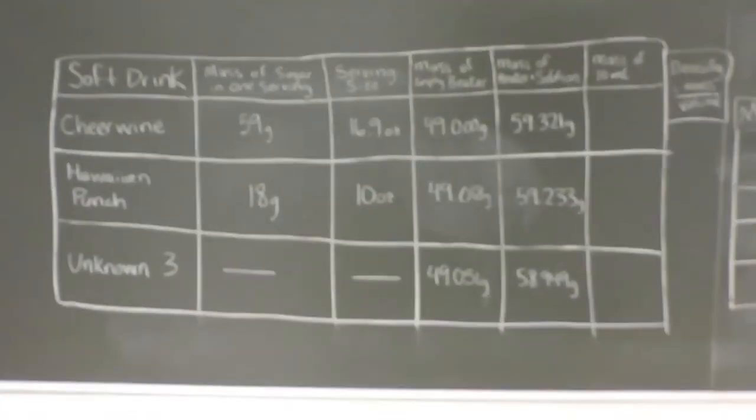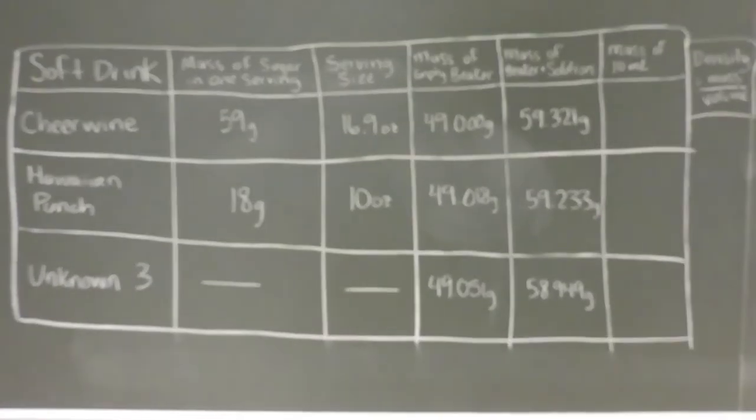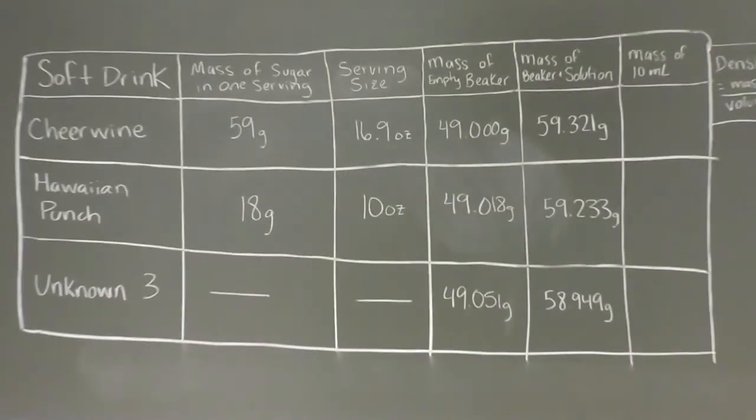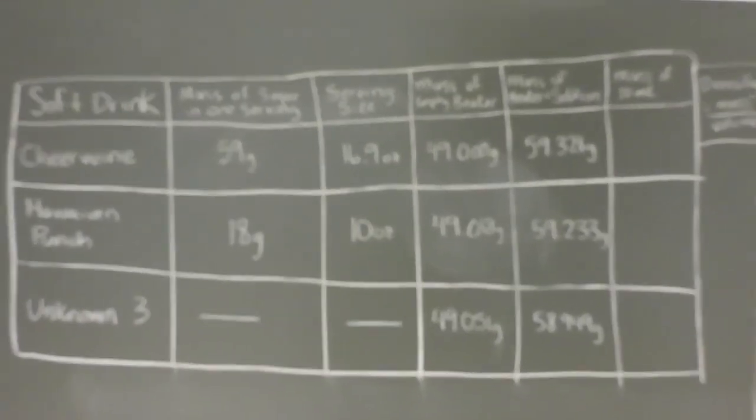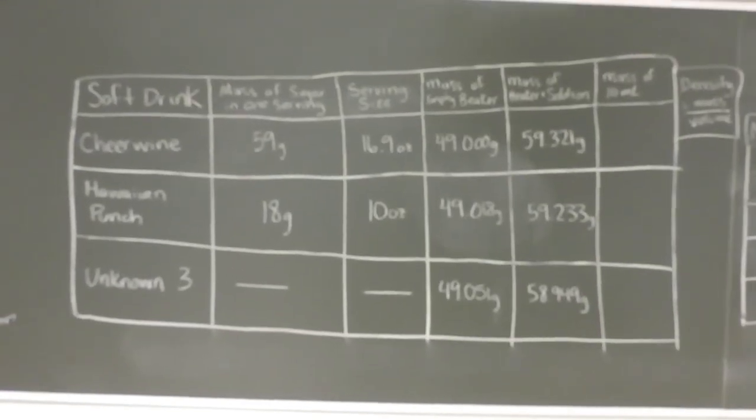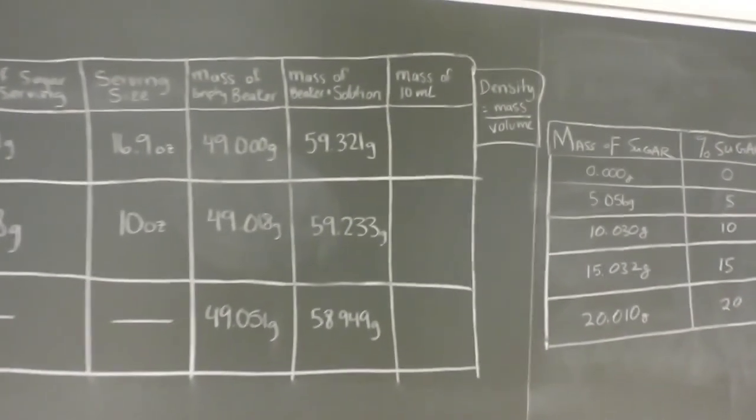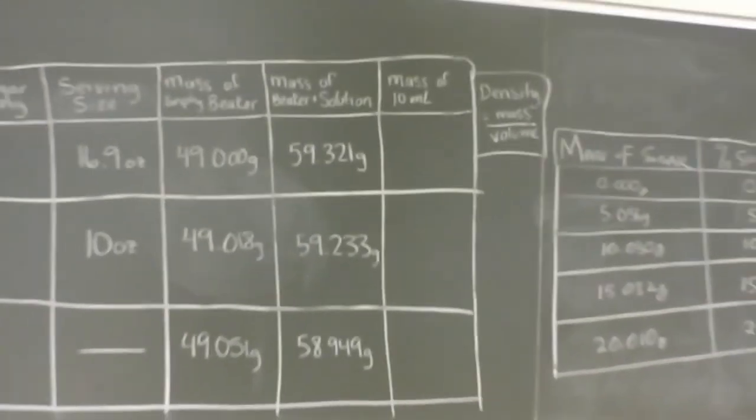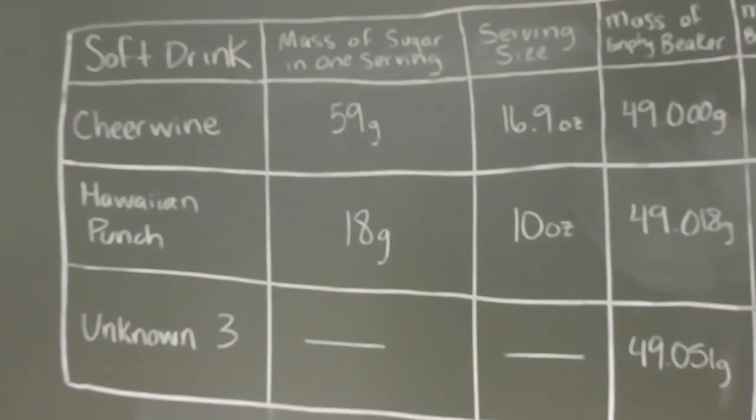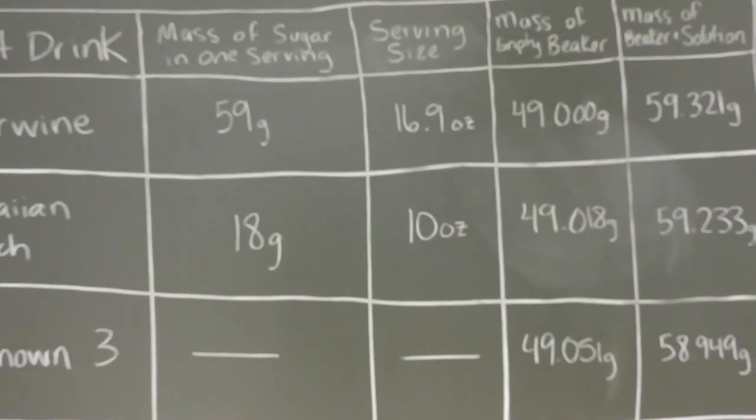So with all this data in hand, you'll be able to calculate the mass of 10 milliliters of the solution, and from there the density of the solution. And using density in your calibration curve, you'll be able to calculate the mass of sugar in unknown number three.